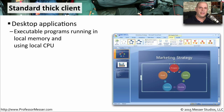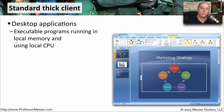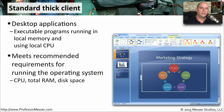A thick client is a traditional computer where all programs run in local executable memory, with its own CPU processing running applications locally. Everything associated with the app occurs on this standard thick client. These devices have an operating system running on them, so we usually get our hardware requirements from the operating system specifications, which give us minimum values for CPU, the amount of memory, and how much storage we're going to need.